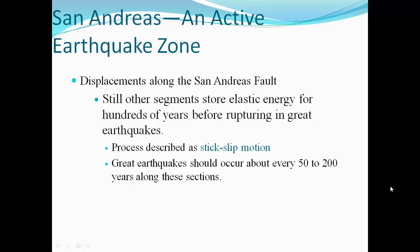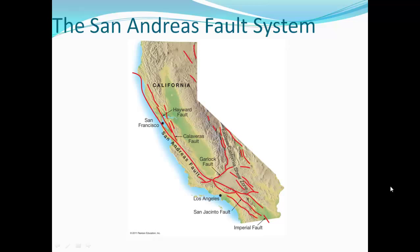Great earthquakes should occur about every 50 to 200 years along these sections. Here's the San Andreas fault system — these are all part of the same San Andreas fault. On one side of the fault the plates try to move northward, while the other side is trying to move southward.